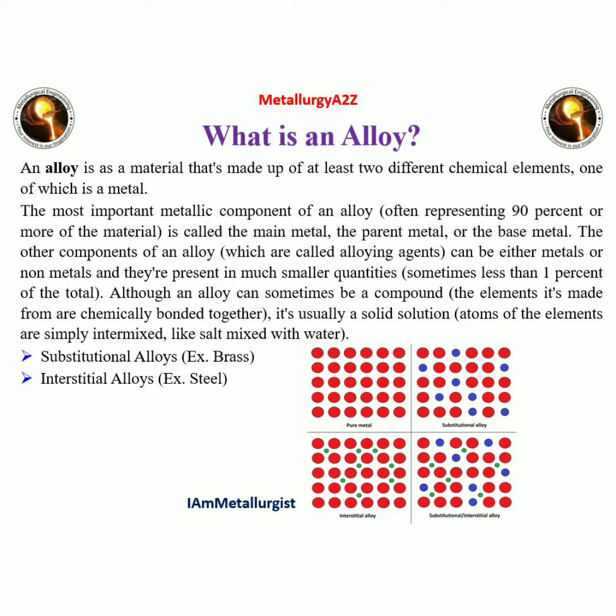There are two types of alloys: the first is substitutional alloys and the second is interstitial alloys. An example of a substitutional alloy is brass, and an example of an interstitial alloy is steel.